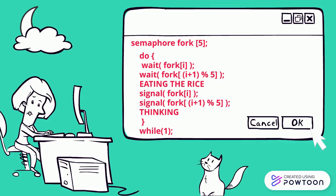After that, a signal operation is performed on fork i and fork i+1 mod 5. This means that philosopher i has eaten and put down the forks on his sides. Then the philosopher goes back to thinking.